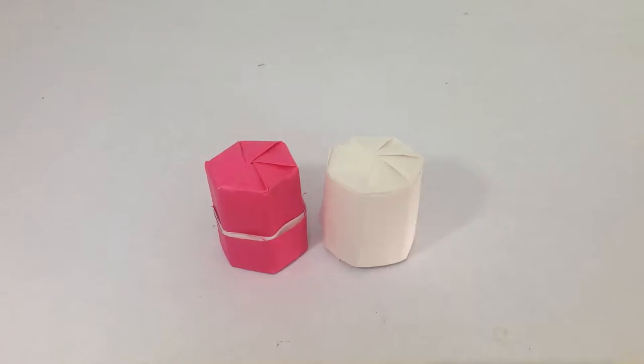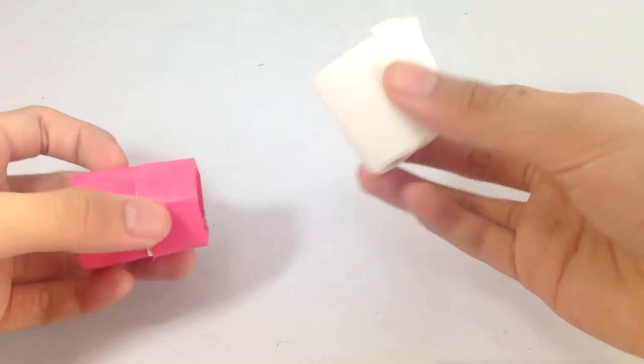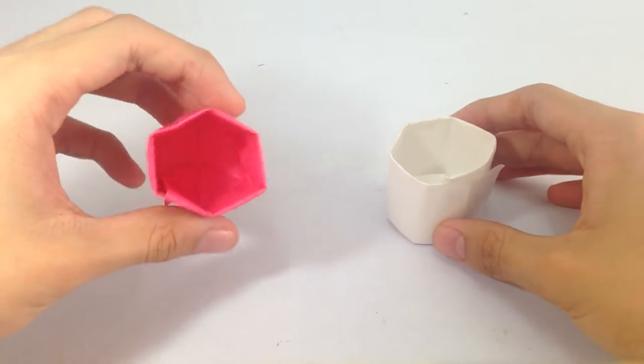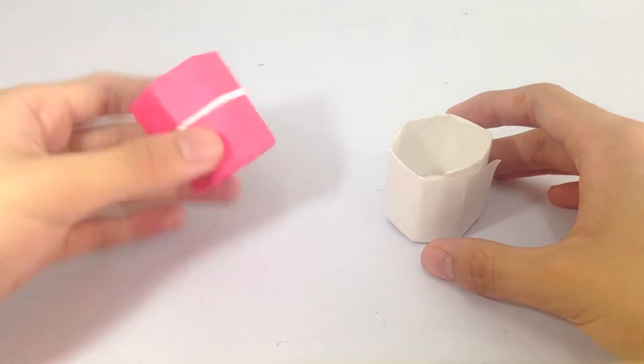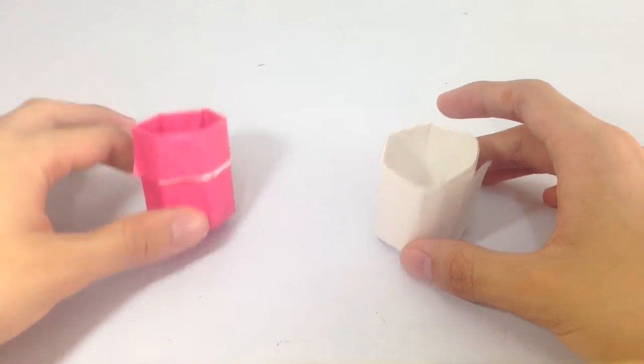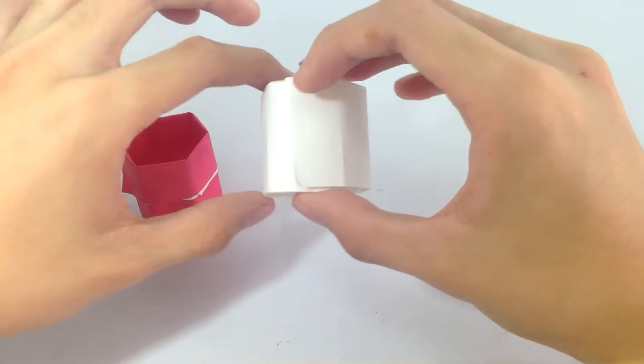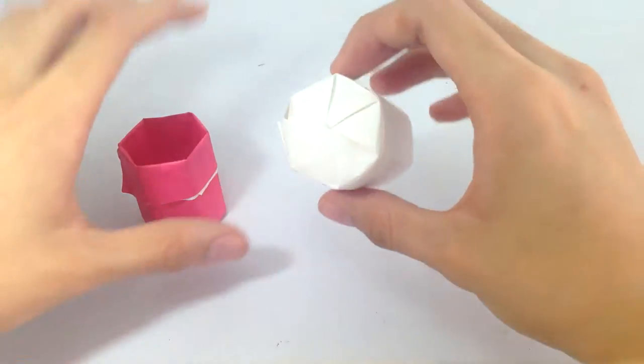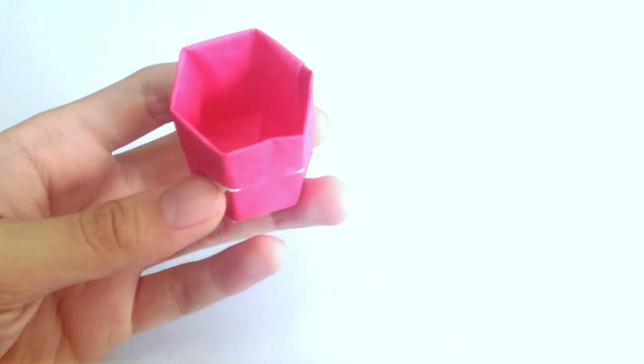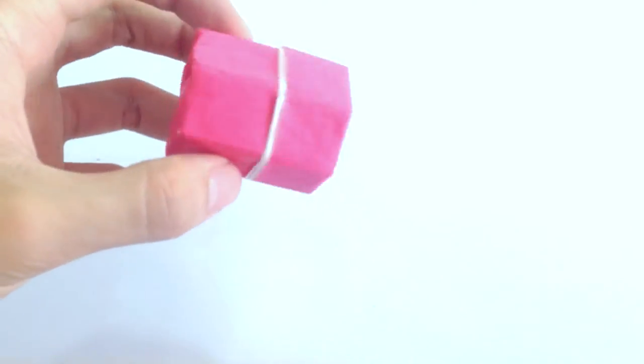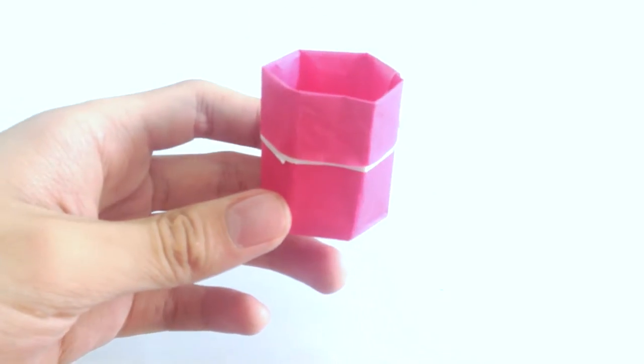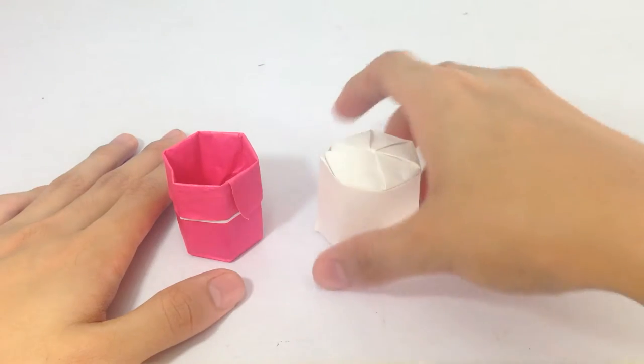Hey guys, today I will show you my newest design. This is a double lock hexagon box and this is a big hexagon box. For this double lock, this is folded from one special paper. Also, the big one here is folded from a grid of square paper.